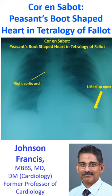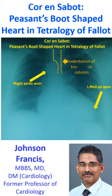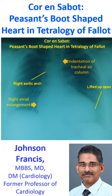The right-sided aortic arch is seen indenting the tracheal air column on the right side. There is mild cardiomegaly and right atrial enlargement as well in this adult person with Tetralogy of Fallot and associated inferior wall myocardial infarction.